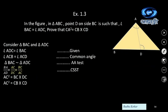In triangle ABC, point D is on side BC such that angle BAC and angle ADC are congruent. Prove CA square equals CB × CD. Consider triangles BAC and ADC. Angle ADC is congruent to angle BAC (given), and angle ACB is the common angle. So the triangles are similar by AA test. The ratio gives AC upon DC equals BC upon AC, which means AC square equals BC × DC. Hence CA square equals CB × CD, which is what we needed to prove.